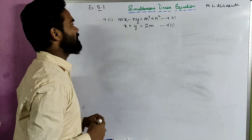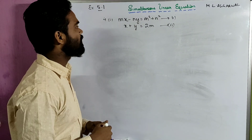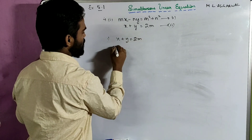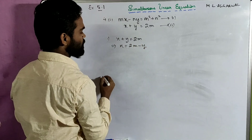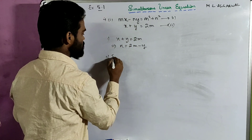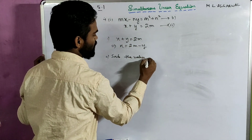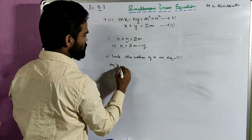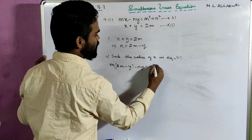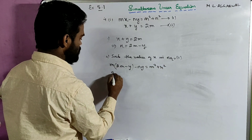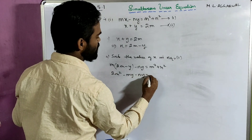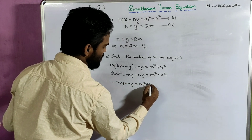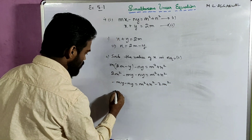Now look at sum number 4, part 1: mx minus ny equals to m squared plus n squared — that is the first equation. And x plus y equals to 2m — that is the second equation. First step: I take the second equation and make x the subject, so x equals to 2m minus y. Now I put this value in the first equation. Substituting the value of x in equation 1: m times (2m minus y) minus ny equals to m squared plus n squared. Opening the bracket: 2m squared minus my minus ny equals to m squared plus n squared.